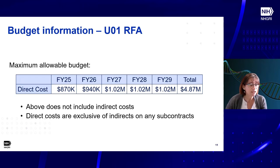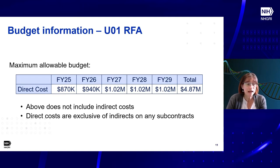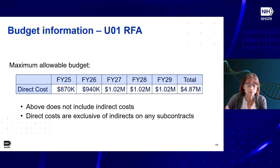An academic medical center has many small primary practices and clinics owned by the parent organization but operating independently without access to genetic services. Would these be considered affiliated locations? As written, if they're owned by the parent organization, they're probably not unaffiliated — they are affiliated. If you want to discuss your particular situation, reach out, but by definition, if they're owned by the parent organization, we would say they're affiliated.